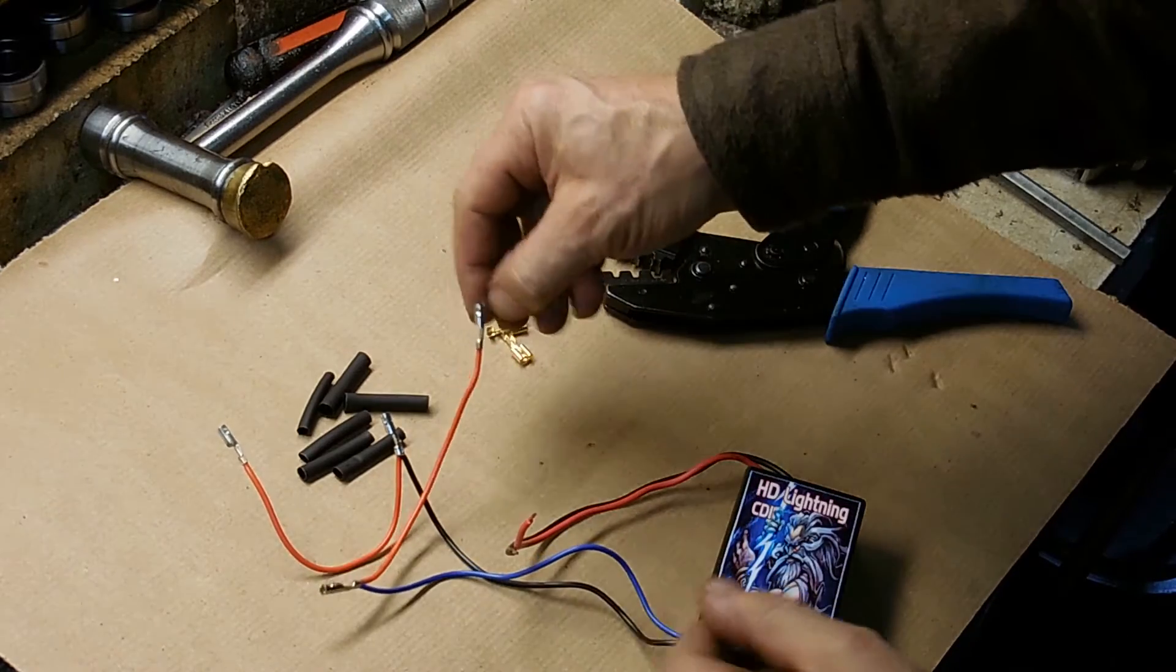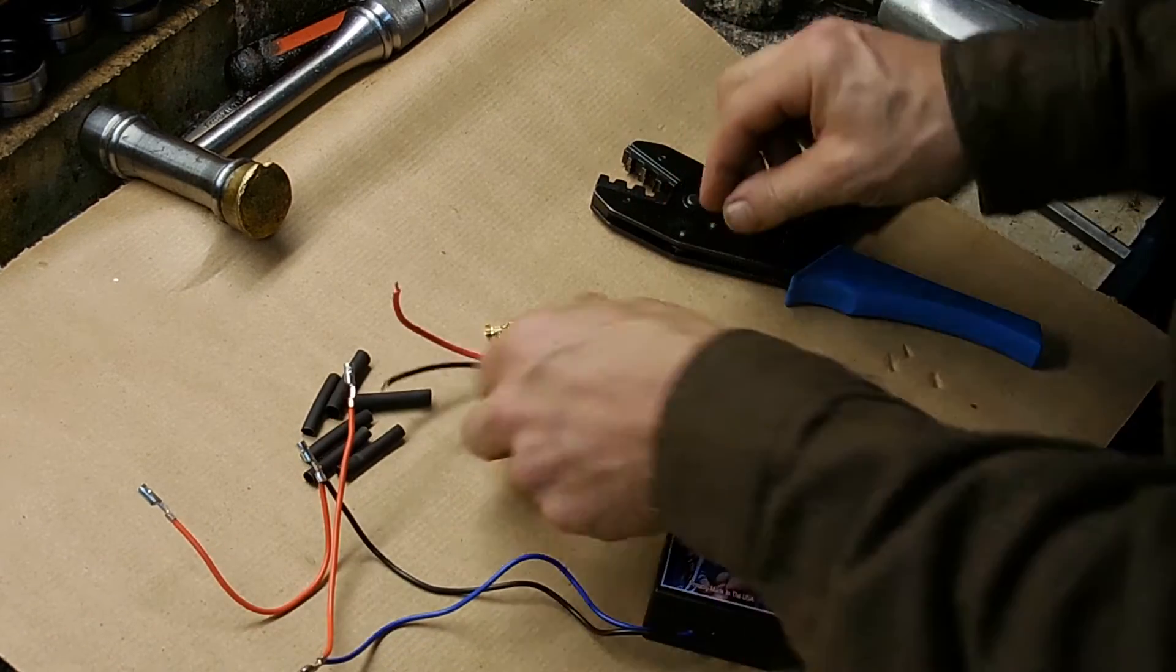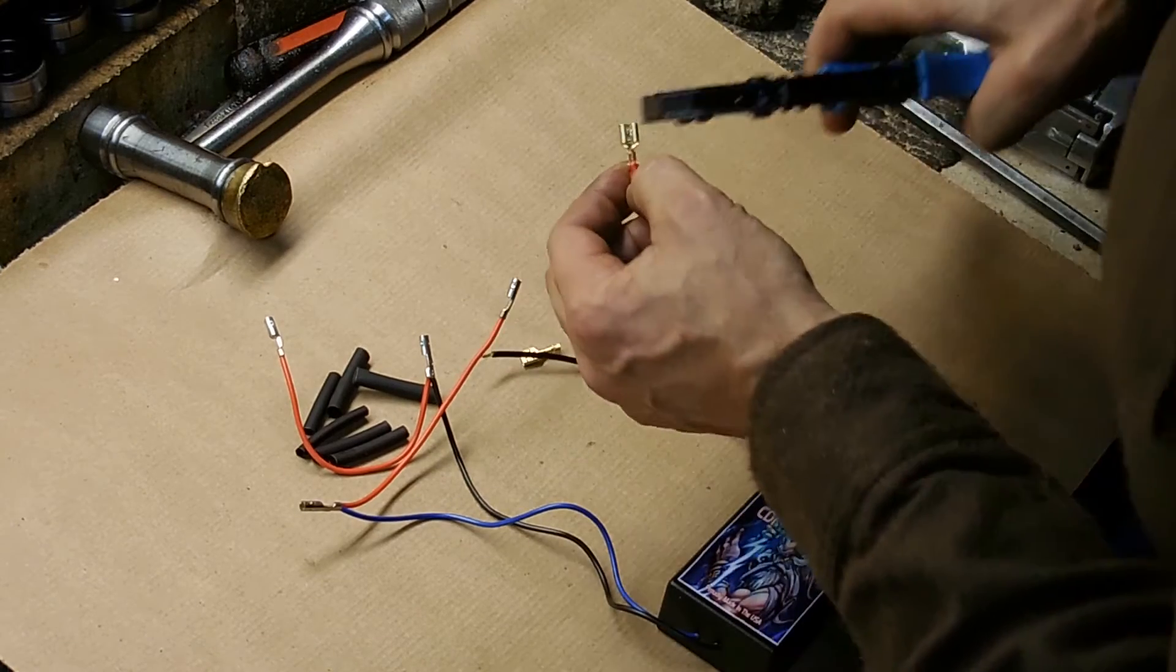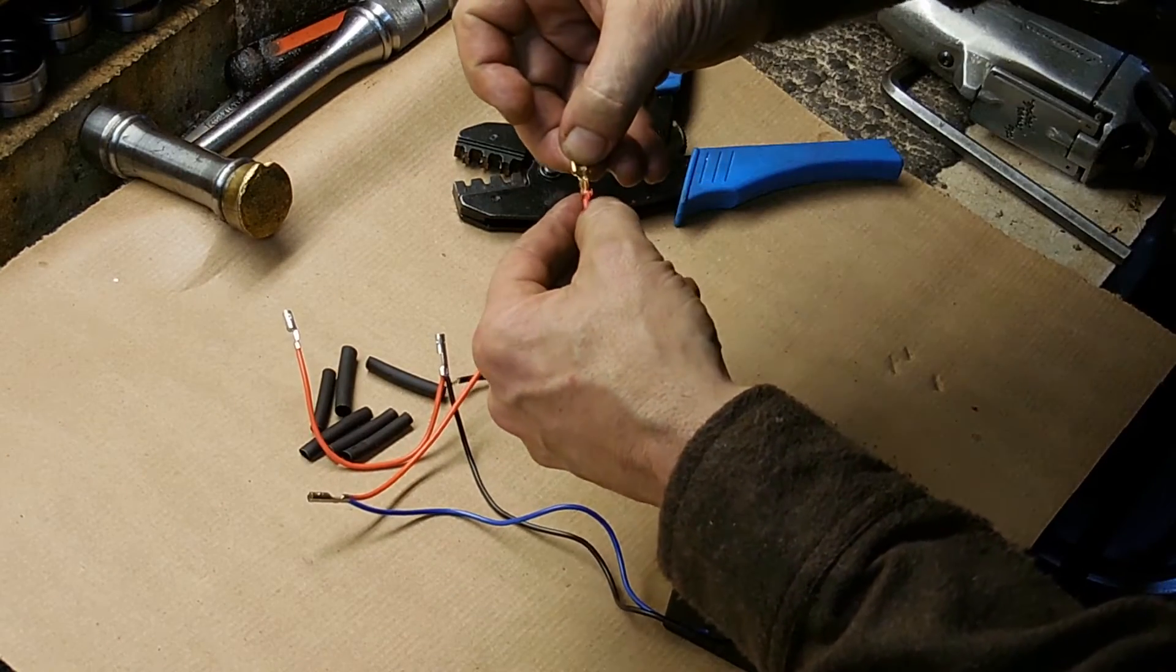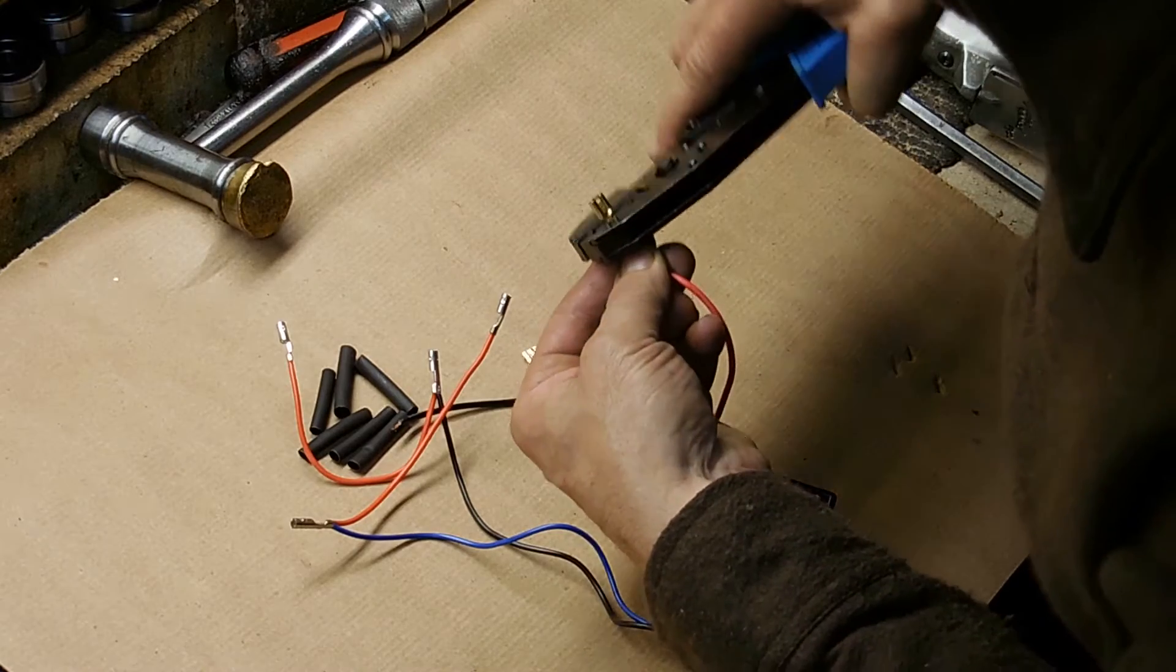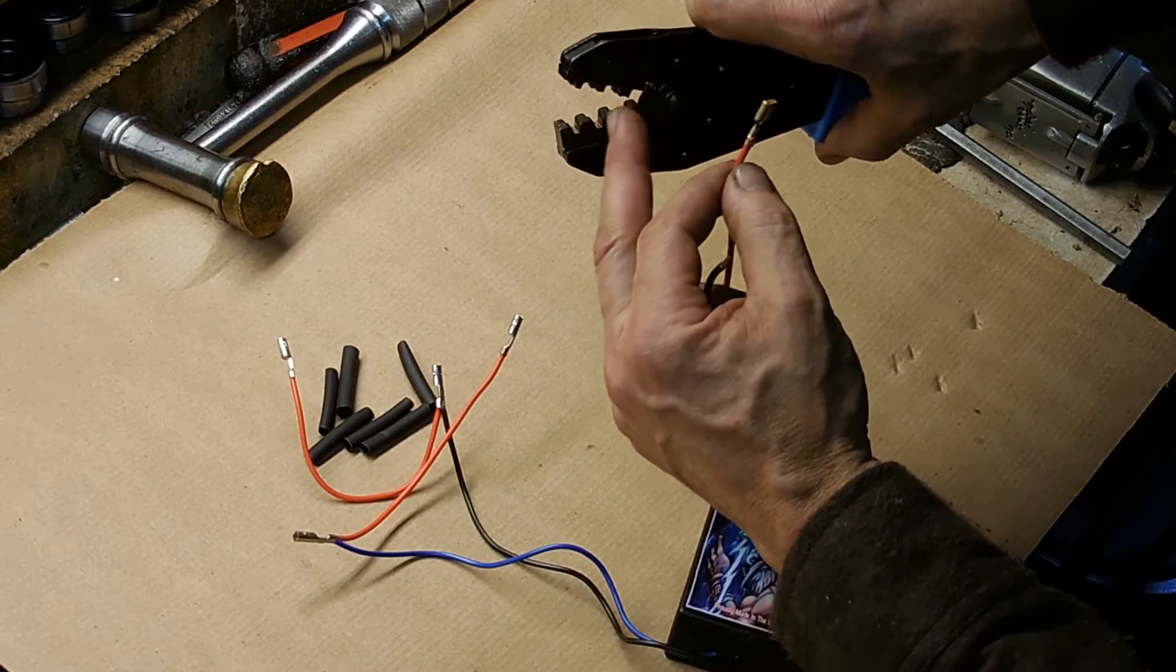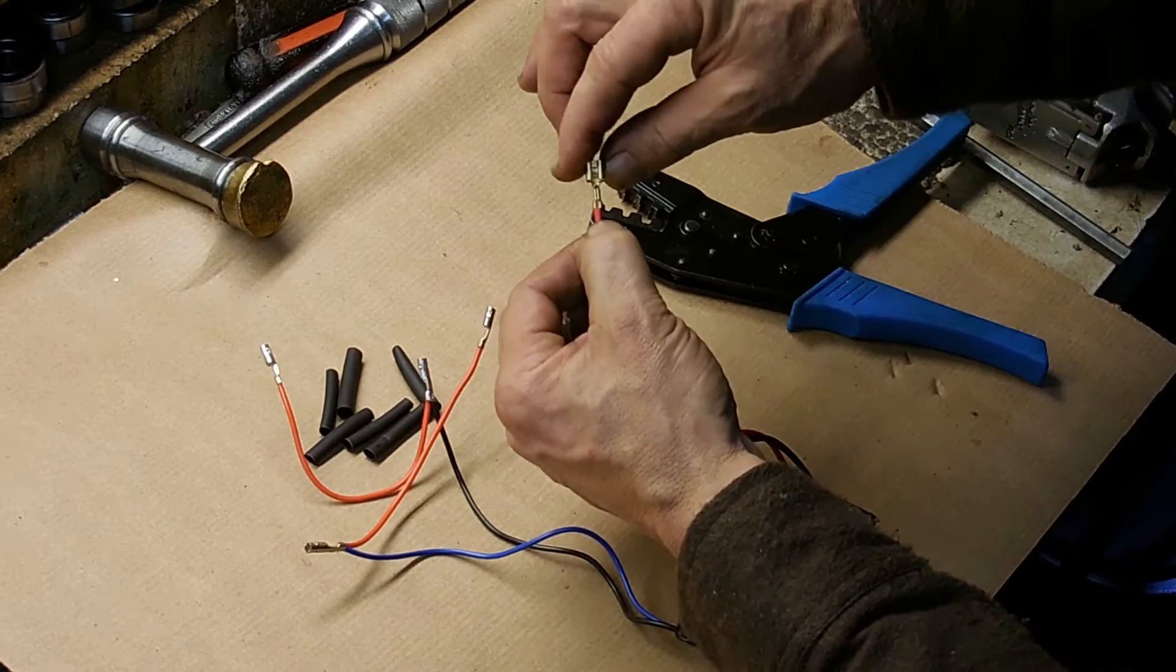So you can see these are the double crimp connectors. We've got that done. There's two more, the red and the black of the CDI, that's the output. And in the case of the twin ignition models, you have two female spade connectors. You can see this tool that I'm using. It's not your standard tool. It is a tool designed for double crimp connectors. And it makes a very nice double crimp. You can see there's two different types of crimps in this thing. And it covers different sizes, so you can always find just the right crimp.